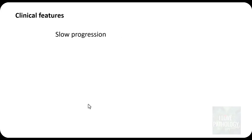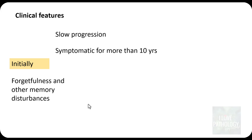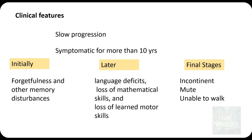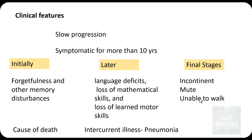How do these patients manifest? This is a very slowly progressing disease and symptoms can last more than 10 years. In the initial stages, patients manifest with forgetfulness and memory disturbances. Later they develop language deficits, loss of mathematical skills, and loss of previously learned skills. In the final stages they become incontinent, mute, and unable to walk. The most common cause of death is intercurrent illness, particularly pneumonia.